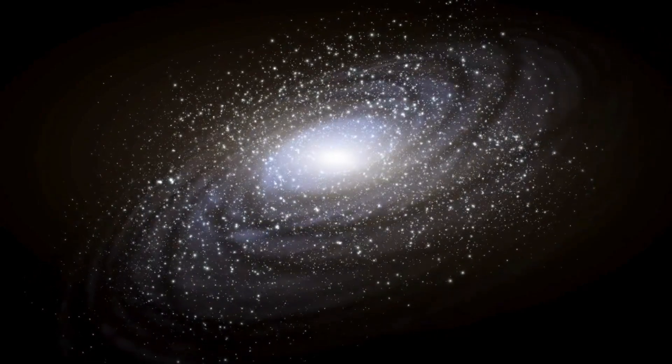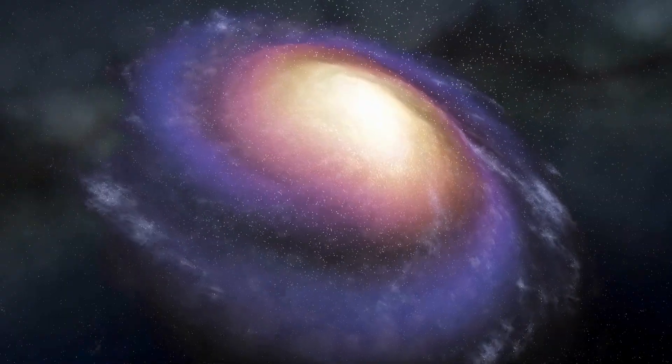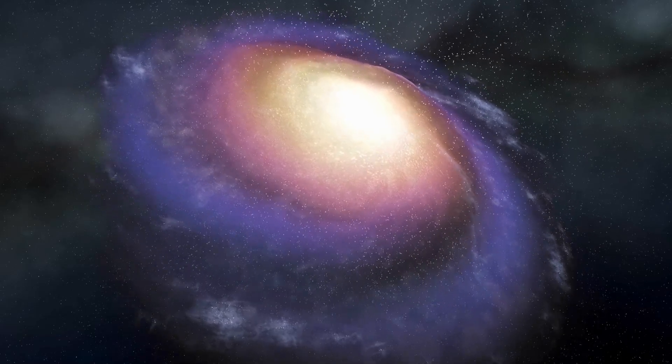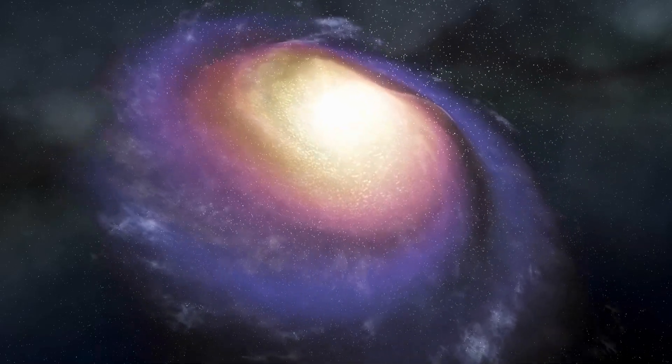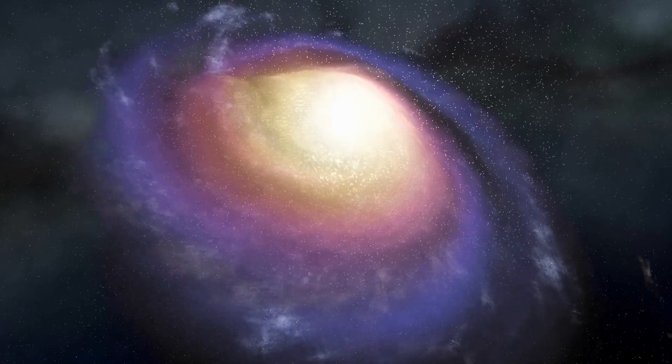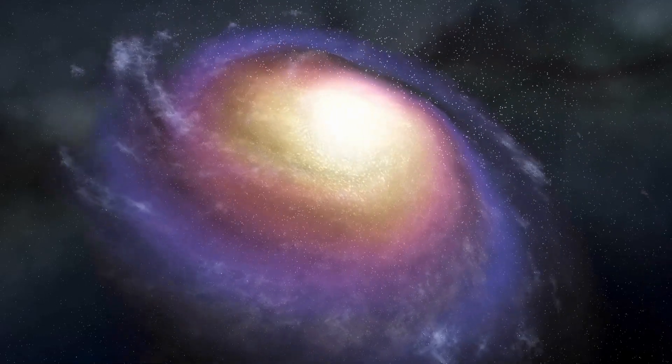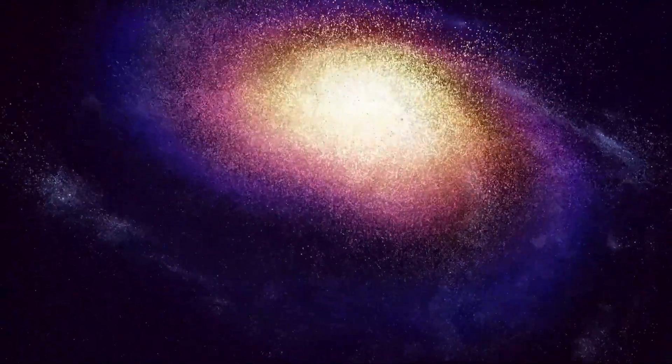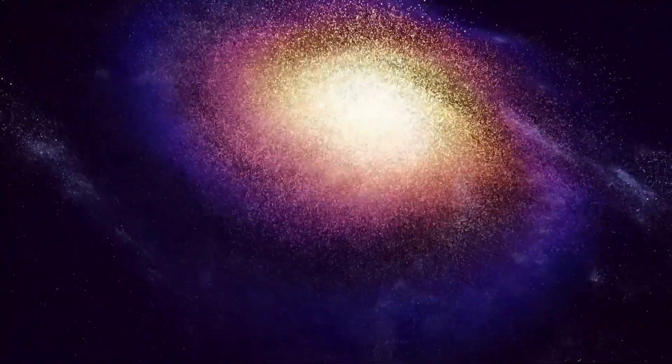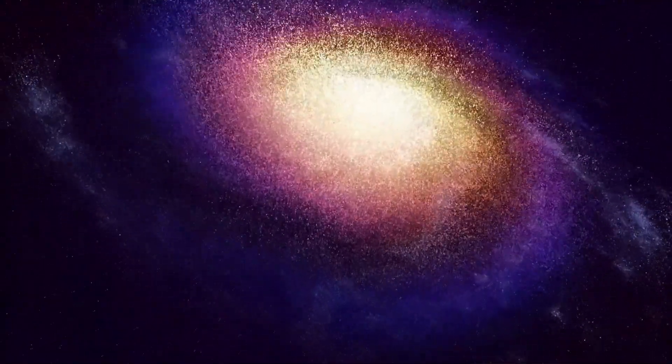Following a supernova event, the collapsed core of a star may birth either a neutron star or a black hole. Neutron stars are incredibly dense, encapsulating up to three times the mass of the Sun within a confined space comparable to a modern-day city. Black holes are infinitely dense, exerting gravitational forces so strong that even light cannot escape.